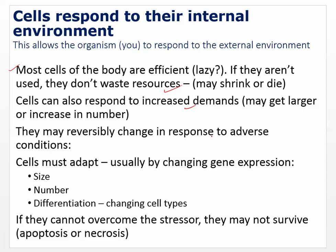Cells must adapt usually by changing gene expression. They may turn on or turn off genes to adjust in size or in the number of cells lining a tissue or muscle. Differentiation is a changing of cell type — many times they may go from columnar epithelial to squamous epithelial cells. If they can't overcome the stressor, they may not survive, and that's where we get into apoptosis or necrosis.